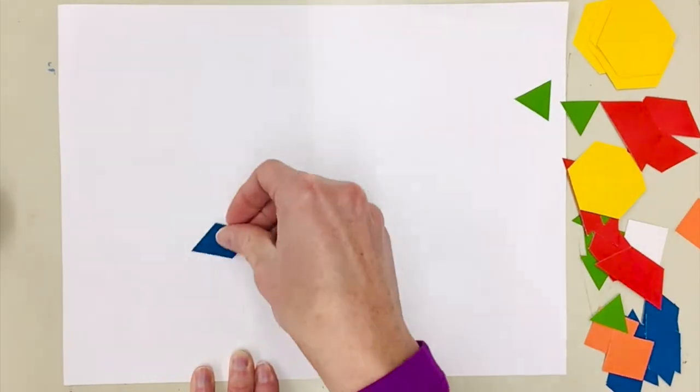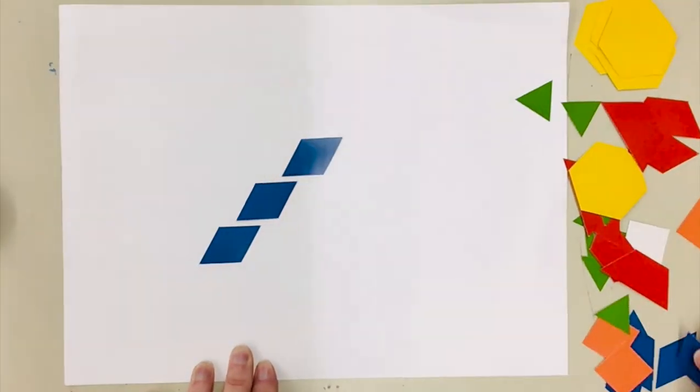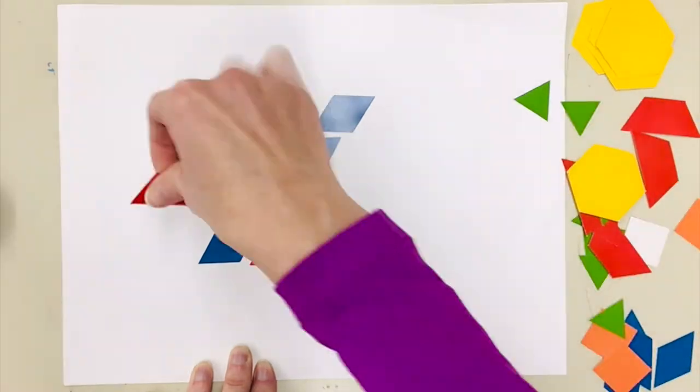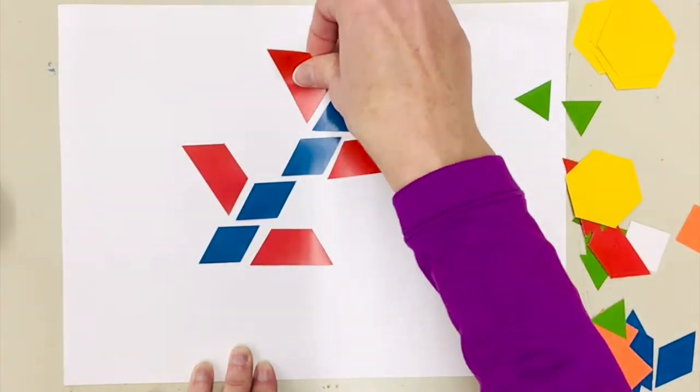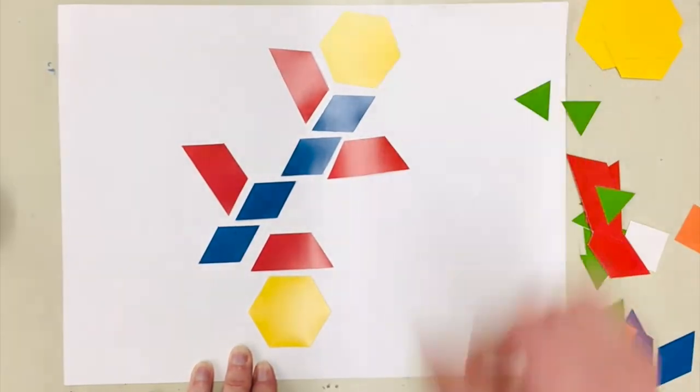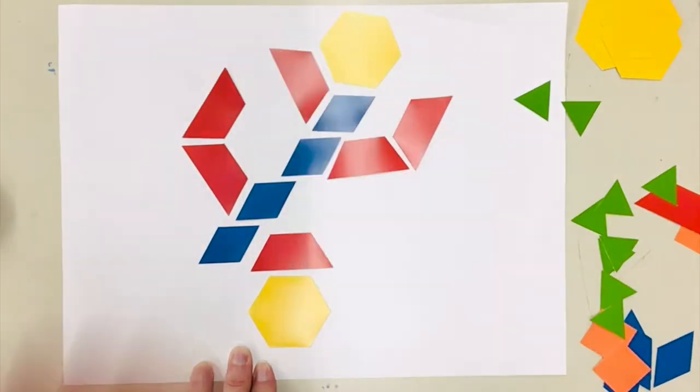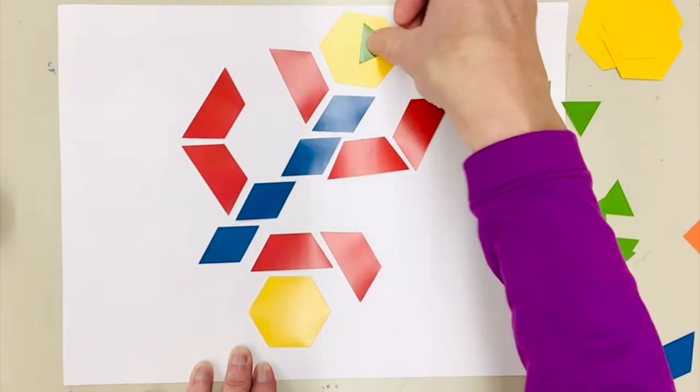Now if you have a glue stick you can glue down your design at the end with a glue stick. You don't have to. All I require you to do is to make me a fun design with the shapes and then take a picture of it with your iPad and upload it to Seesaw.